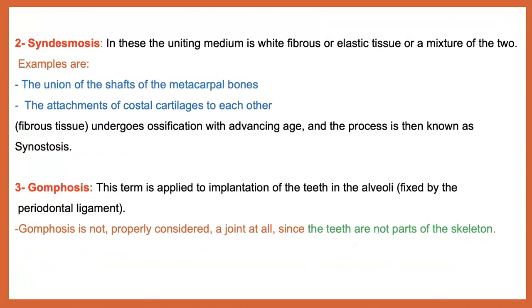The second type of fibrous joint is syndesmosis. The uniting medium is fibrous or elastic tissue, or a mixture of both. An example of syndesmosis can be found between the shaft of the metacarpal bones. In the equine, we have the cannon bone (the third), and then the second and fourth splint bones — the joint between the second, fourth, and third metacarpal bones is the syndesmosis.